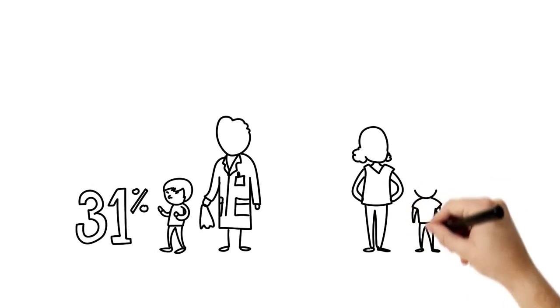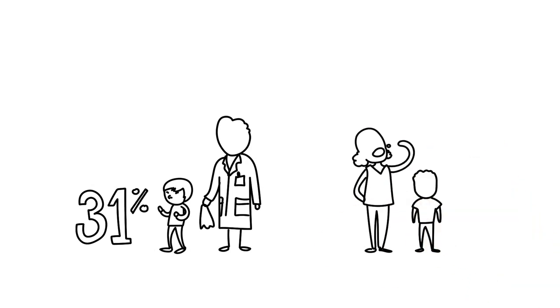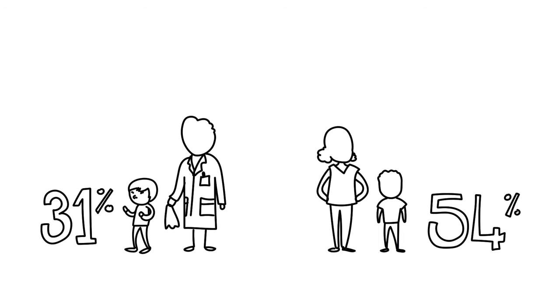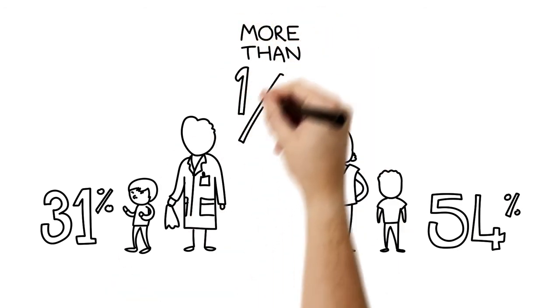More surprising, the kids whose moms had the lowest levels of omega-3 in their blood at the beginning of the study had their risk for asthma cut by 54%. That's right, by more than one half.